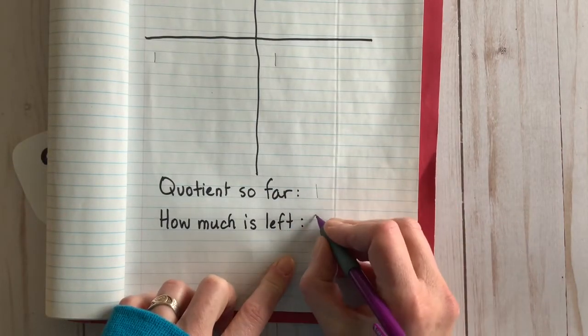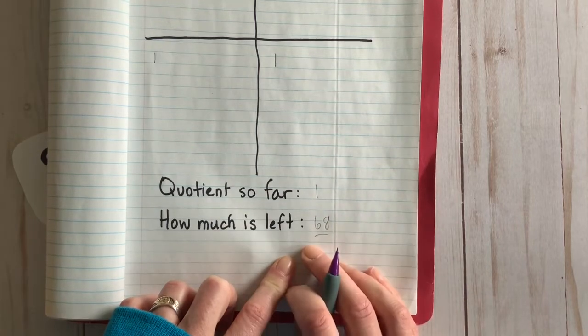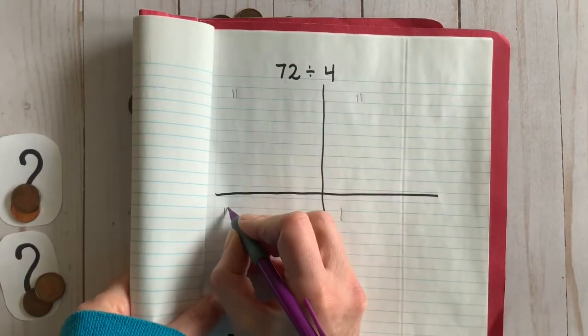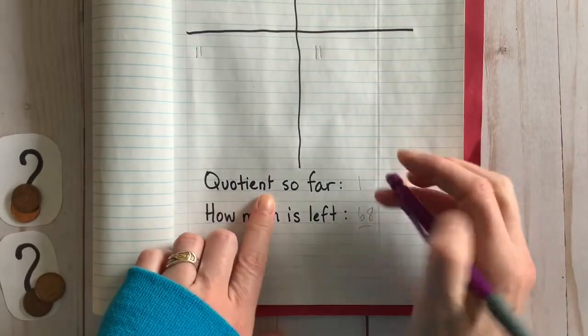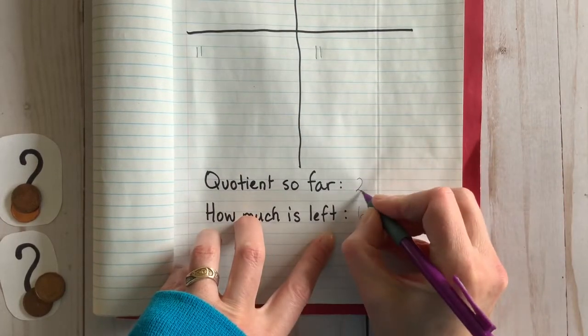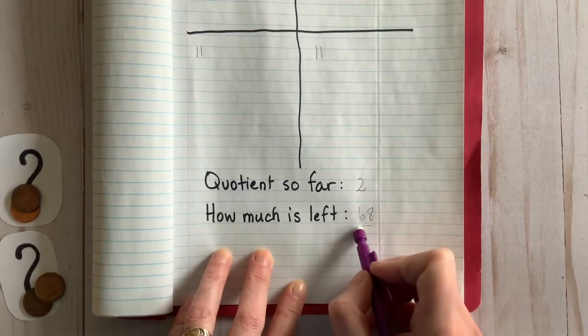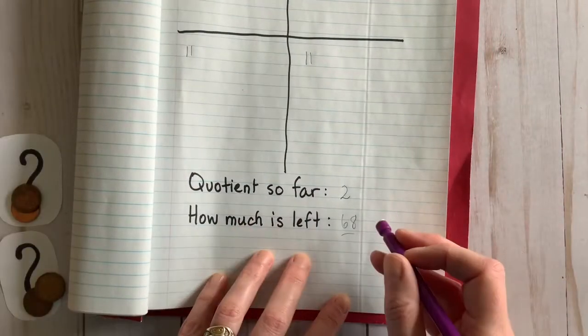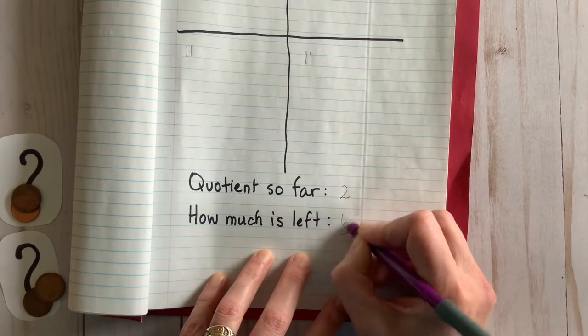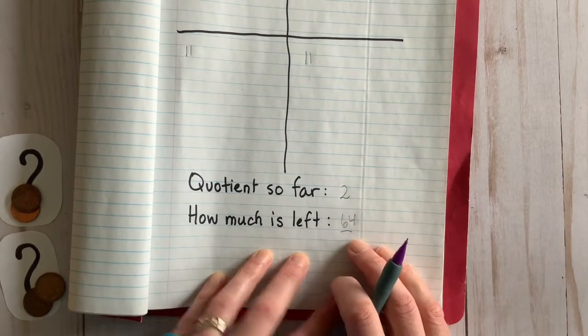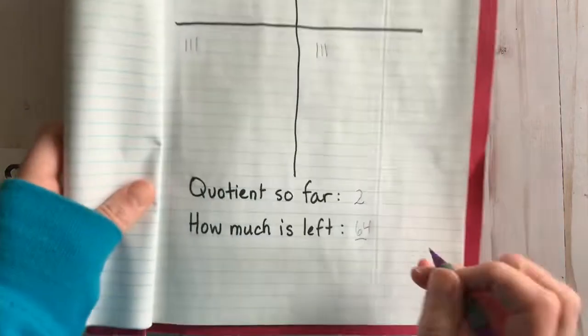72 take away the four that we used leaves us with 68. Let's keep going. Our quotient now is two, and how much is left? Why don't you take a look. We need to take away another four, and that leaves us with 64.